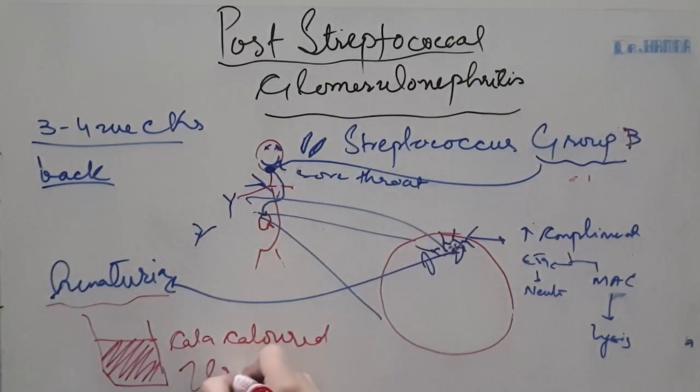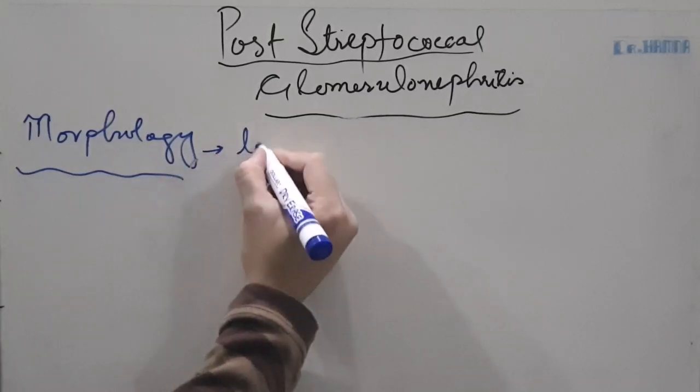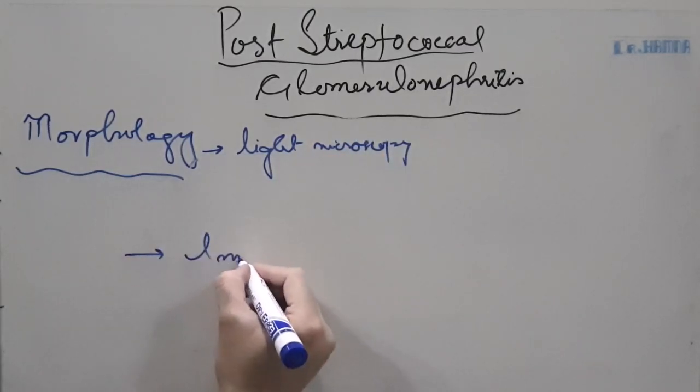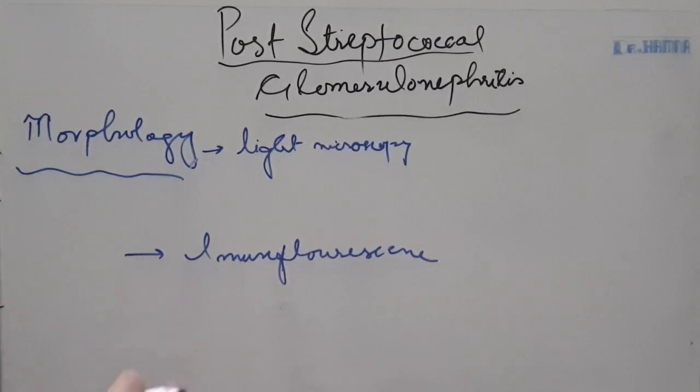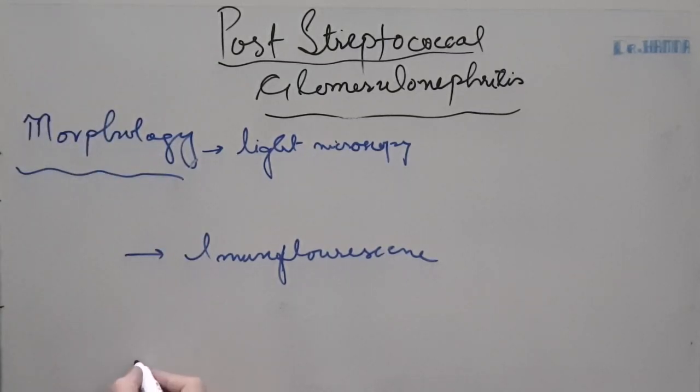Now let us see what will be the morphology of kidney in patients with post-streptococcal glomerulonephritis. Whenever we talk about the morphology of glomerulonephritis, we look at three main components. The first component is light microscopy, the second component is immunofluorescence. Immunofluorescence basically are the tests which detect the various antibodies deposited within the glomeruli such as IgG, IgM, C3, IgA, and they produce specific fluorescent patterns within the glomeruli when seen under a specialized light. And the third component is electron microscopy. Whenever you talk about morphology of glomerulonephritis, you talk about these three components.